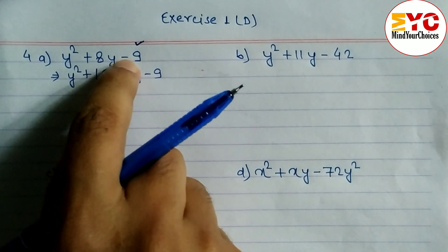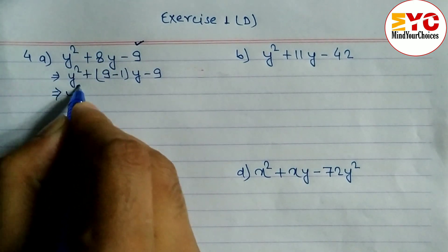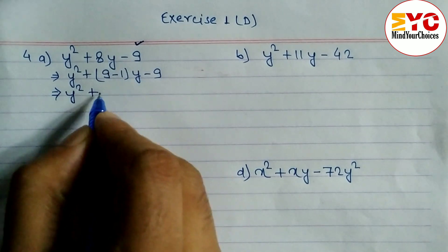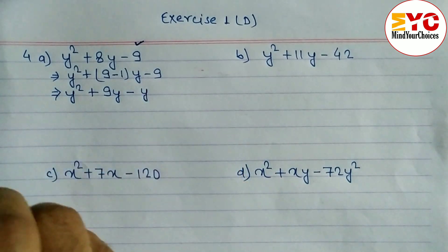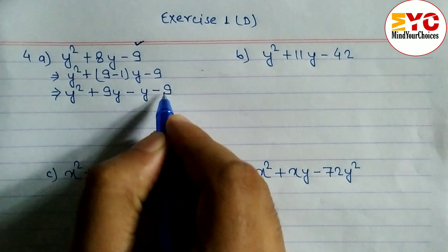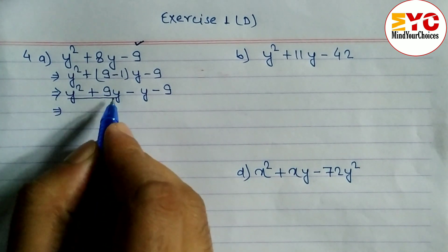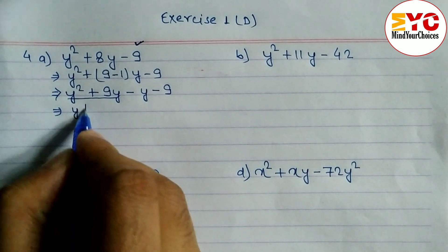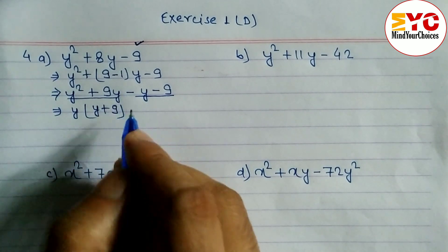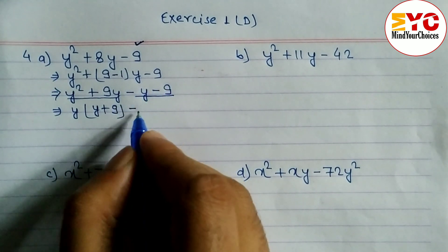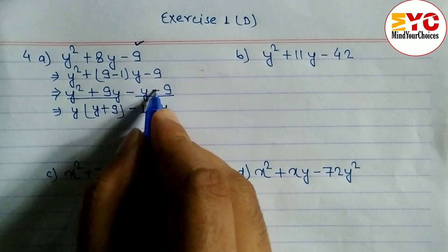Since there is a minus sign we subtract, and where there is plus we add. So we write y² + 9y - y - 9. Now from the first two terms we take common: y is common from y² and y, leaving y(y + 9). From the last two terms we take minus as common, leaving nothing extra so we write 1.